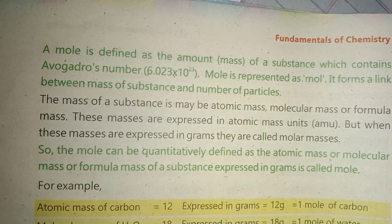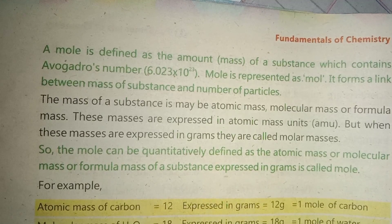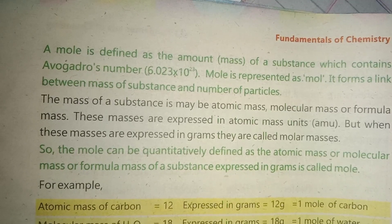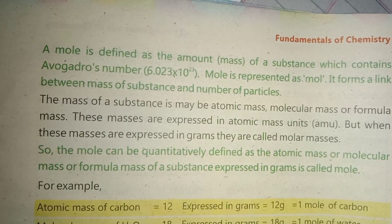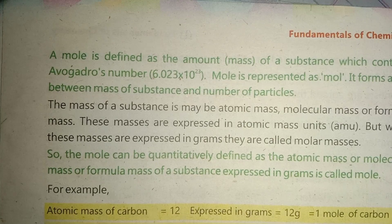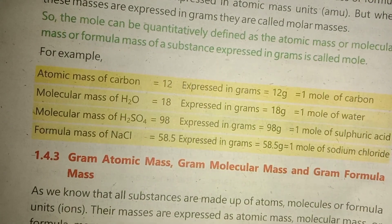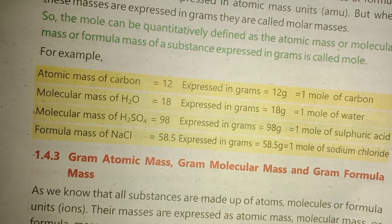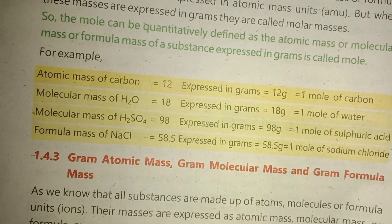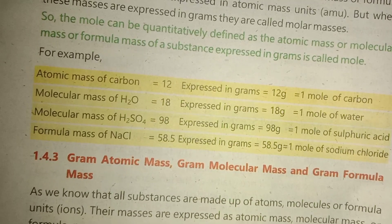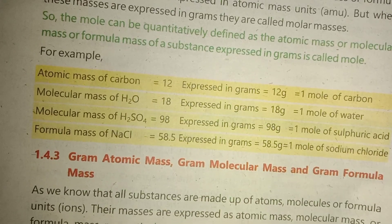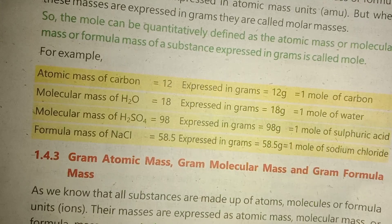For example, the atomic mass of carbon is 12 atomic mass units. When we represent this in grams, we say 12 grams — and 12 grams of carbon is equal to 1 mole of carbon.